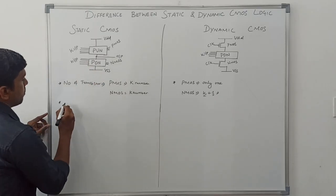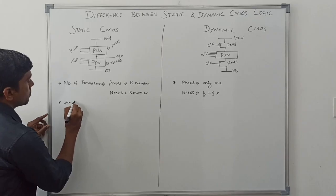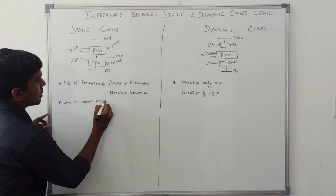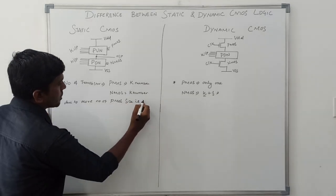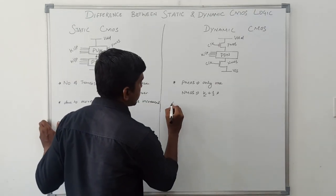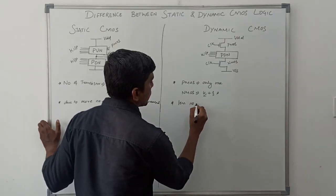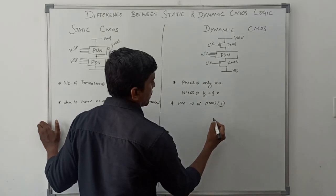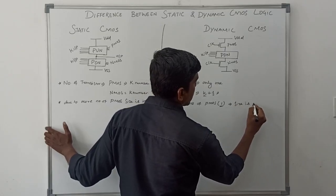Due to the more number of PMOS transistors used in static CMOS, the size is increased. In dynamic CMOS, there is less number of PMOS — only one PMOS transistor — so the size is decreased.